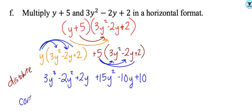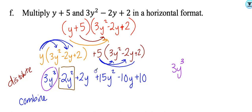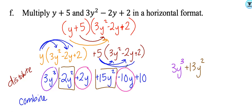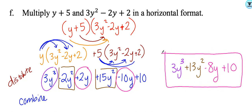Now combine like terms. My highest exponent is 3y cubed — nothing else has a cubed, so that's part of my final answer. For y squared: negative 2y squared plus 15y squared gives positive 13y squared. For y terms: positive 2y and negative 10y gives negative 8y. Last, tack on plus 10 because it can't be combined with anything. It's totally up to you whether you distribute horizontally or use the box method.